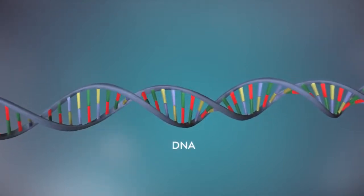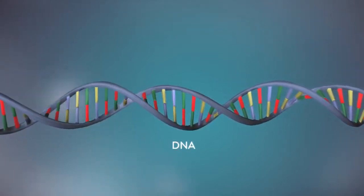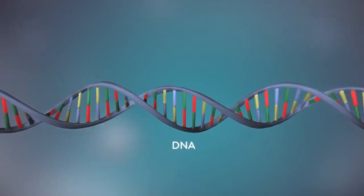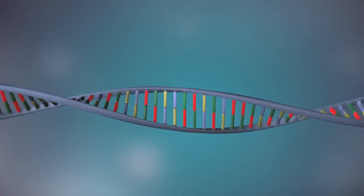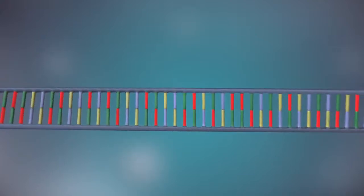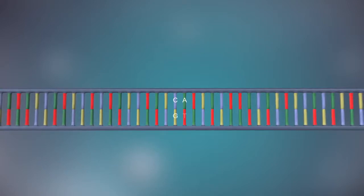DNA is a molecule made up of two strands twisted around each other in a double helix shape. Each strand is made up of a sequence of four chemical bases represented by the letters A, C, G and T.